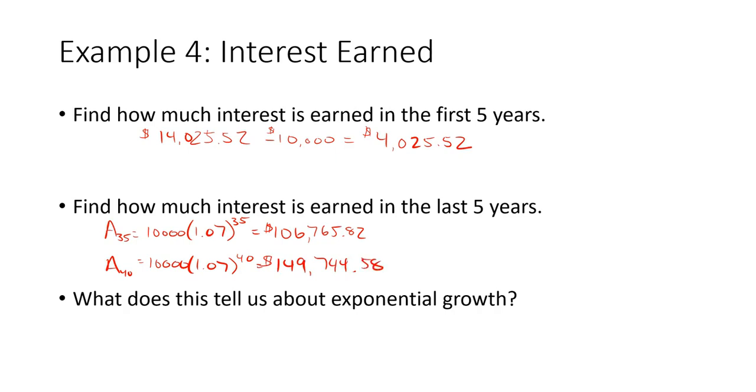And so the interest we earned in the last five years is the difference between these two numbers. So we just subtract. $149,744.58 minus $106,765.82, and the interest earned in the last five years, $42,978.76.